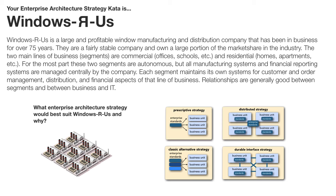Let's take a look at the first case study: Windows R Us. Windows R Us is a large and profitable Windows manufacturing and distribution company, and it's been in business for over 75 years. They're a fairly stable company and own a large portion of the market share in the industry. The two main lines of business — the business units or business segments — are commercial windows (offices and schools) and residential (homes, apartments, etc.). These two segments are autonomous, but all the manufacturing systems and financial reporting systems are managed centrally by the company. Each segment maintains its own systems for customer and order management, distribution, and the financial aspects of that line of business.